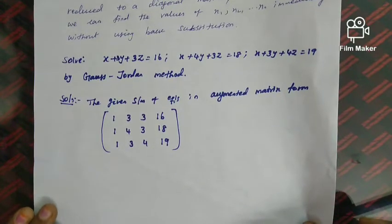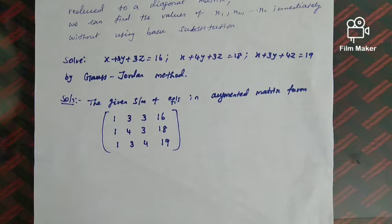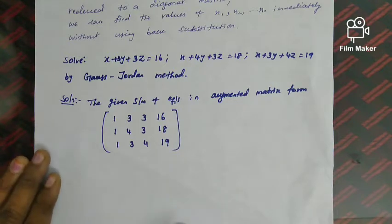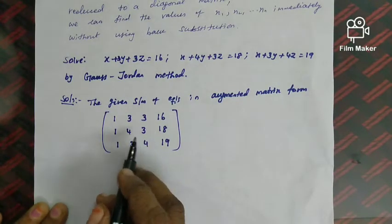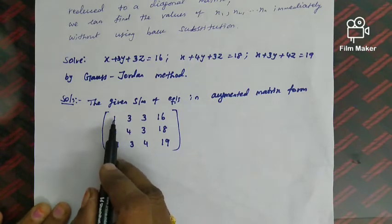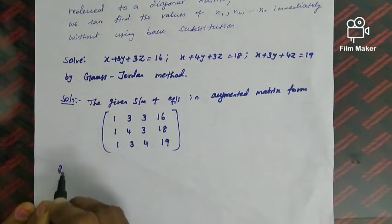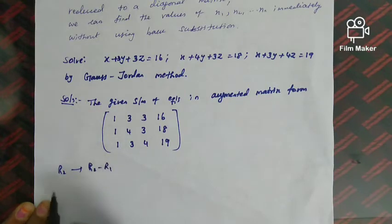The augmented matrix is written as [1, 3, 3 | 16; 1, 4, 3 | 18; 1, 3, 4 | 19]. We now apply row operations to bring it to diagonal form. We keep the first row as is, then apply R2 = R2 − R1 and R3 = R3 − R1.